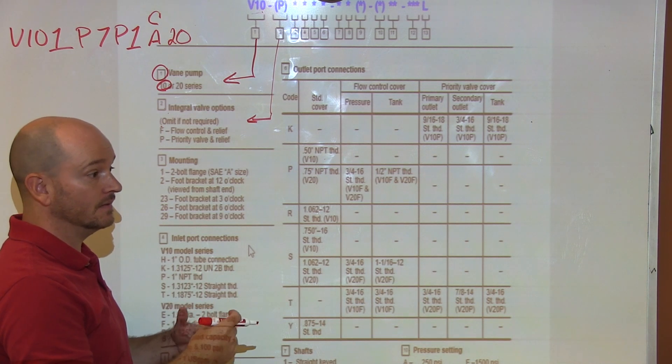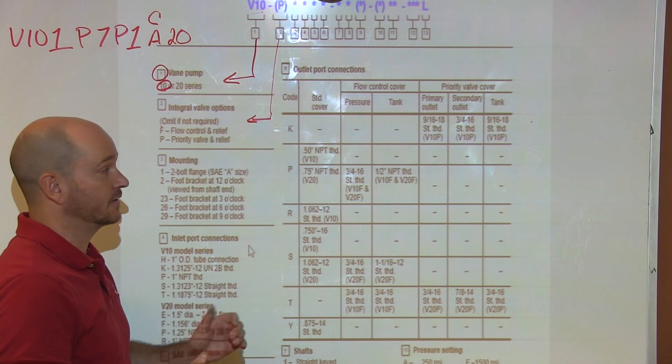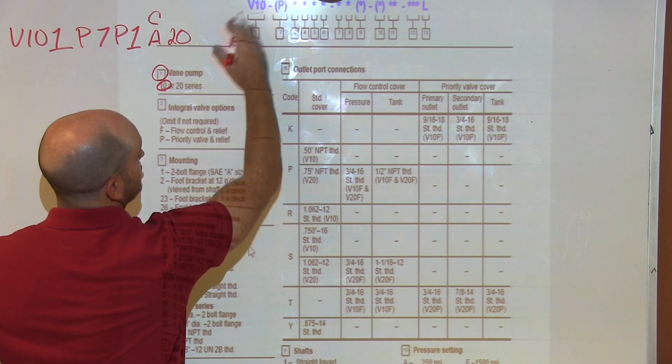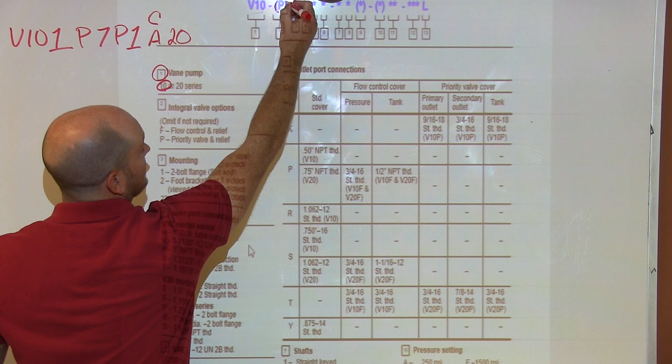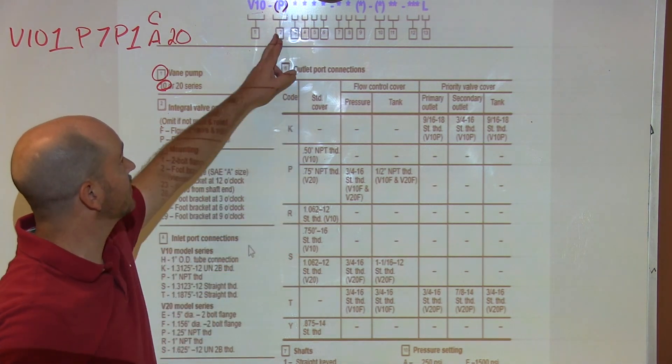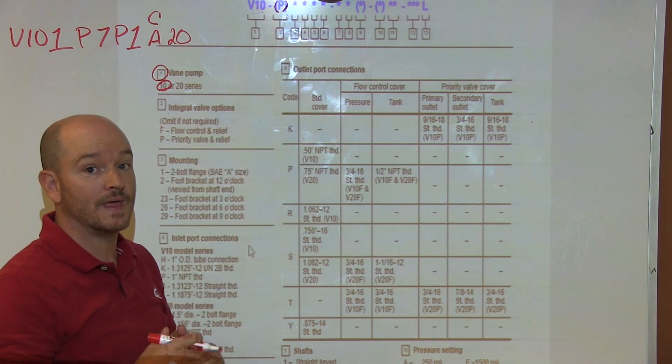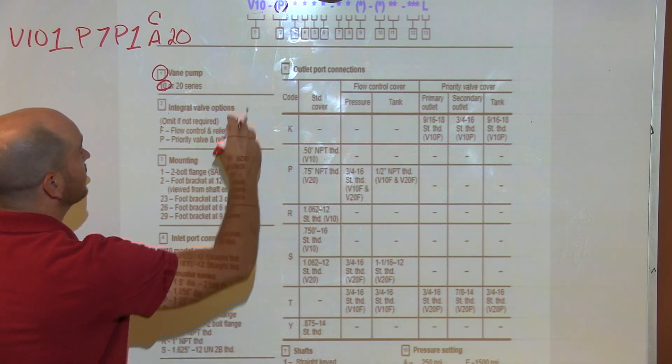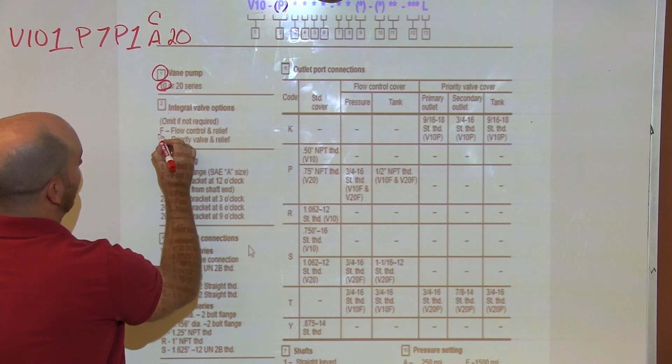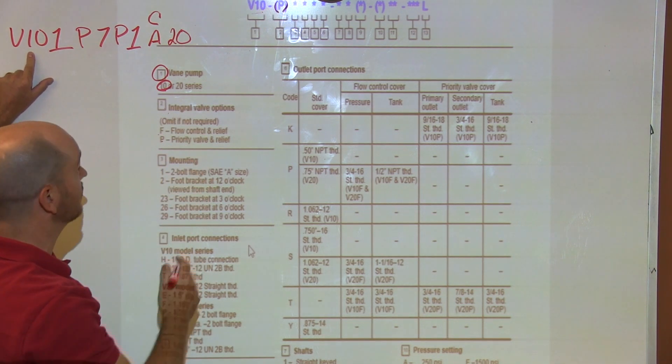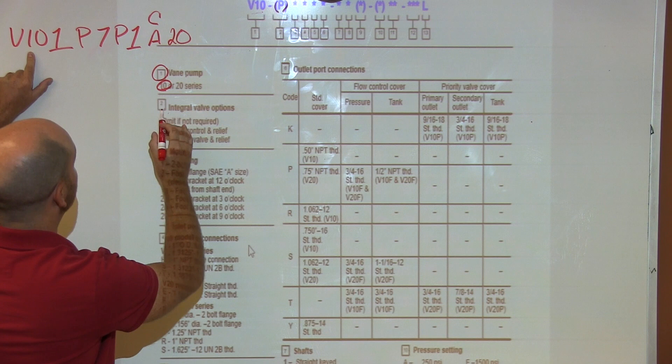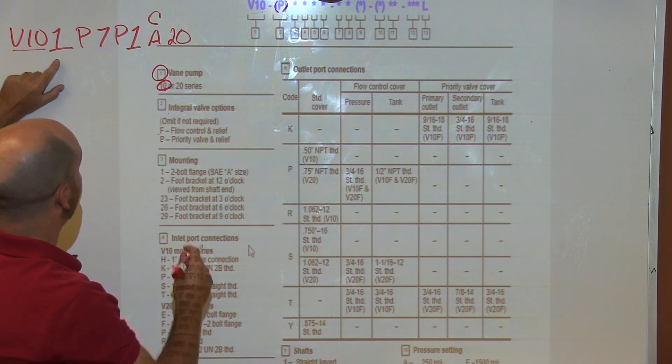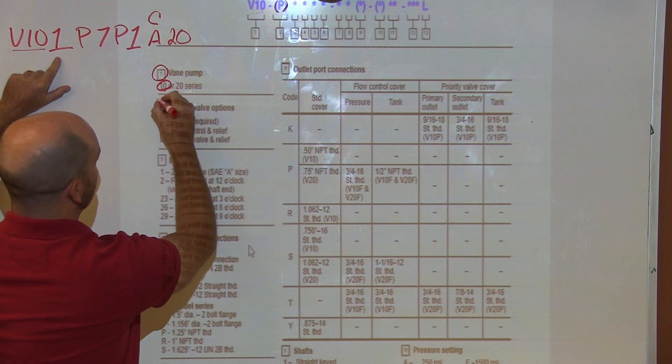The next part is this 2 right here, and you can see that this is in parentheses. When these are in parentheses, that often means they might be omitted or they're not common. So if I look here, I'm going to look for an F or a P in my model number that comes after the numbers I've already used. In this case I've used V10 and 1 is not my next one, so this is omitted. This is not required.